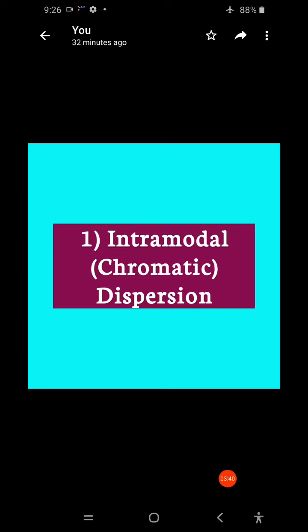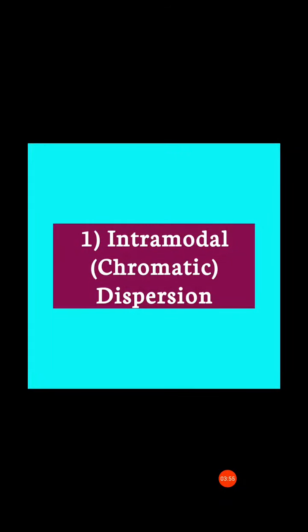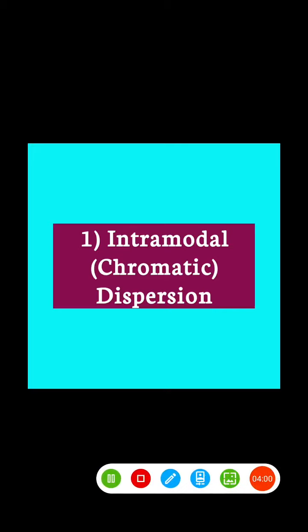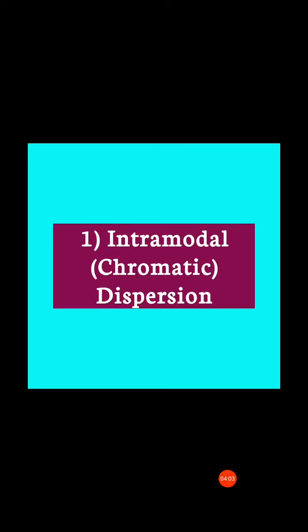Group velocity is the speed at which the energy in a particular mode travels along the fiber. Because intramodal dispersion depends on wavelength, its effect on signal distortion increases with the spectral width of the light source.